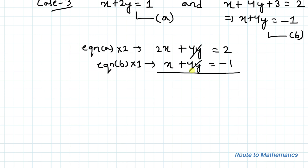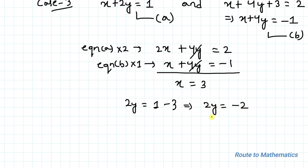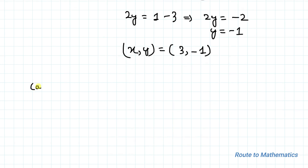Subtracting, the 4y terms cancel, leaving 2x − x = x = 2 − (−1) = 3. Substituting x = 3 into equation a: 2y = 1 − 3 = −2, so y = −1. This again gives the solution (x, y) = (3, −1).